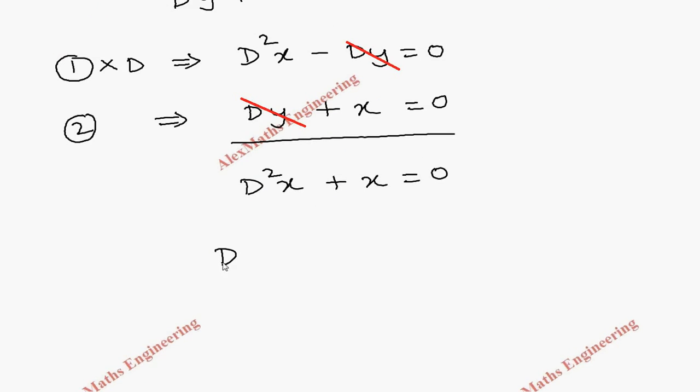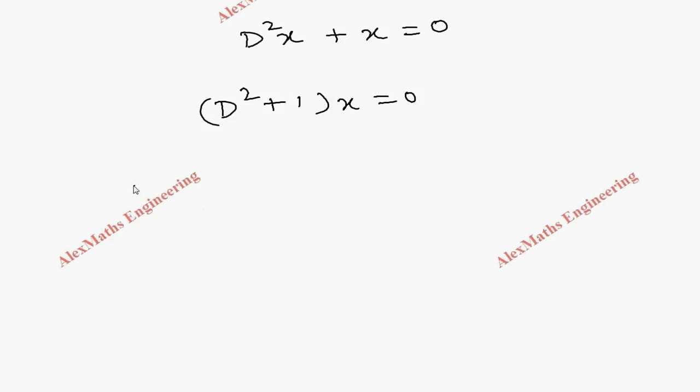Now, it is (D² + 1)x = 0. From this, we can write the auxiliary equation which is m² + 1 = 0 and m² = -1 and m = ±i. We can compare this with α ± iβ. The value of α is 0 and value of β is 1.